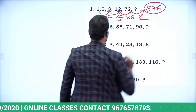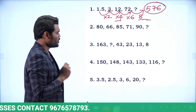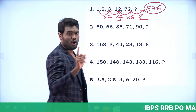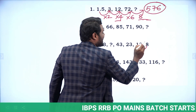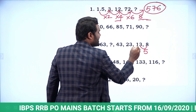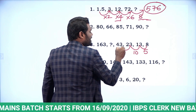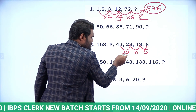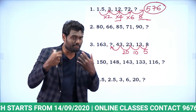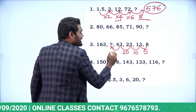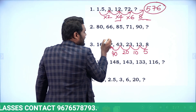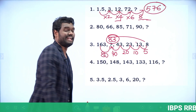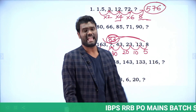Next question: 163, question mark, 43, 23, 13, 8. The series is gradually decreasing. Taking differences: 13 − 8 = 5, 23 − 13 = 10, 43 − 23 = 20. The differences are 5, 10, 20 — doubling each time. So the next difference should be 40, meaning 43 + 40 = 83. The answer is 83.